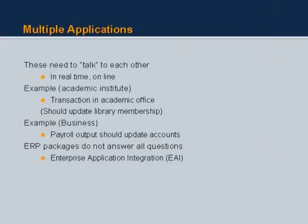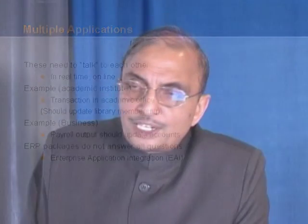Then there are multiple applications which must talk to each other, preferably in real-time online. Take this example of an academic institution: if you come as a student and register in the academic office, you give all your information — name, hostel number, address — and pay the fees. Next day you go to the library to issue books, but the library has a different system.